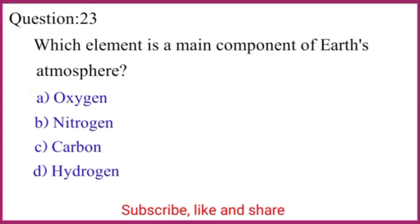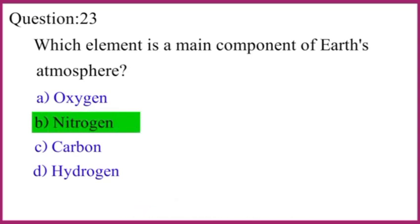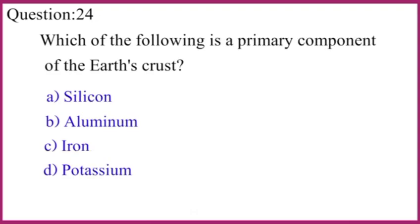Which element is the main component of earth's atmosphere? The correct answer is nitrogen. Which of the following is a primary component of the earth's crust? The correct answer is silicon.